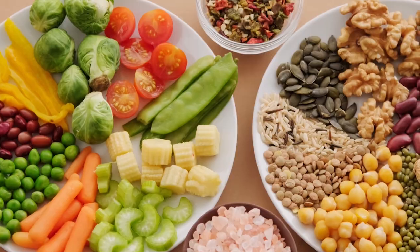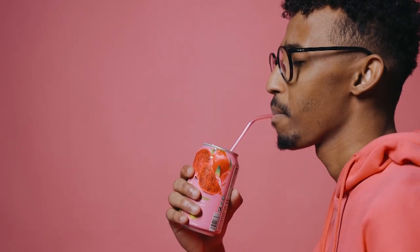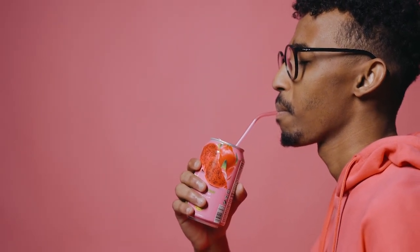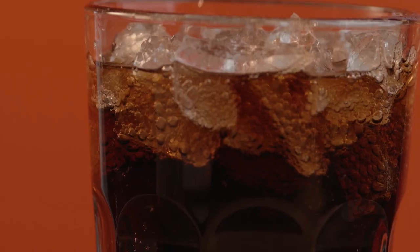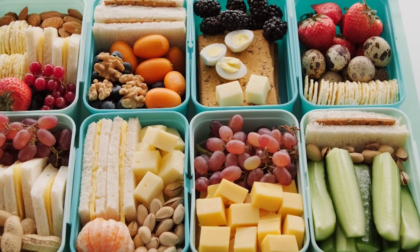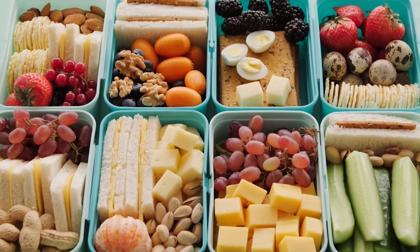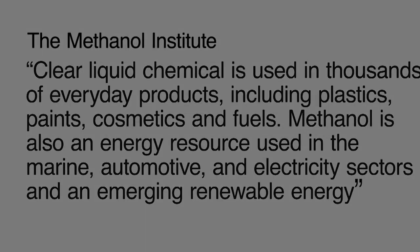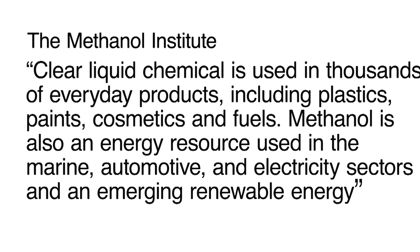Foods such as fresh fruits and vegetables, fruit juices, fermented beverages, and diet soft drinks containing aspartame are the primary sources of methanol in the human body. Our bodies naturally contain methanol from consuming these foods in our diet. Methanol becomes dangerous when we consume too much of it and it overwhelms our bodies.